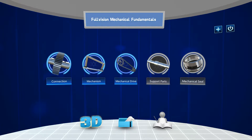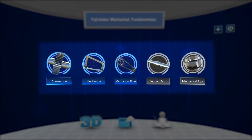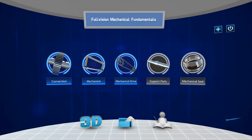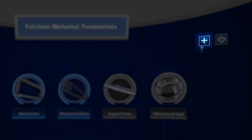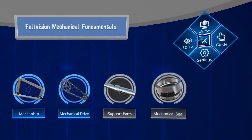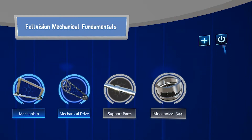When you launch Mechanical, you will see the major systems and components you can explore and learn about. ZView is available and can be activated by selecting the plus sign in the upper right-hand corner. You can also change your preferred language here and close the application.